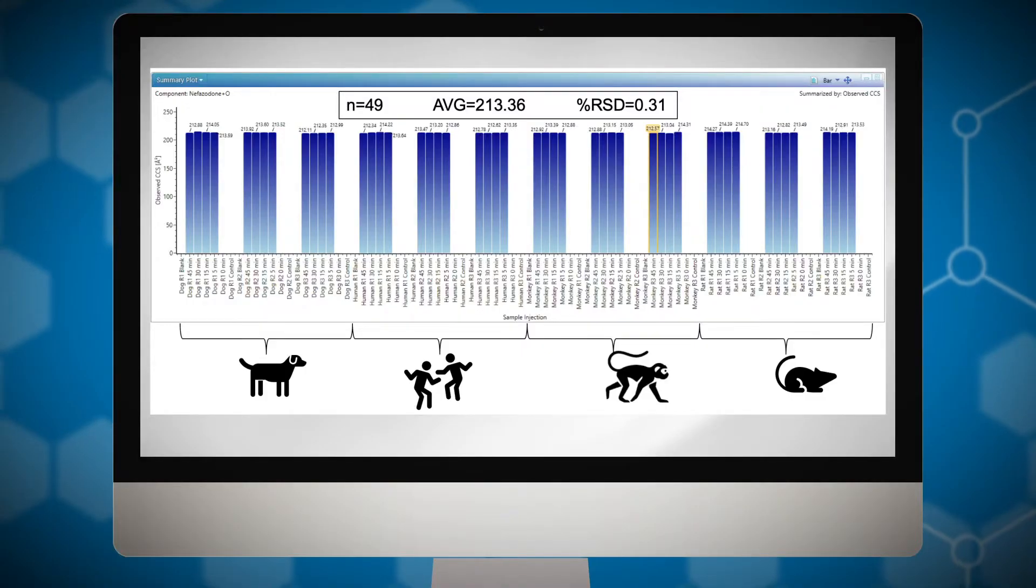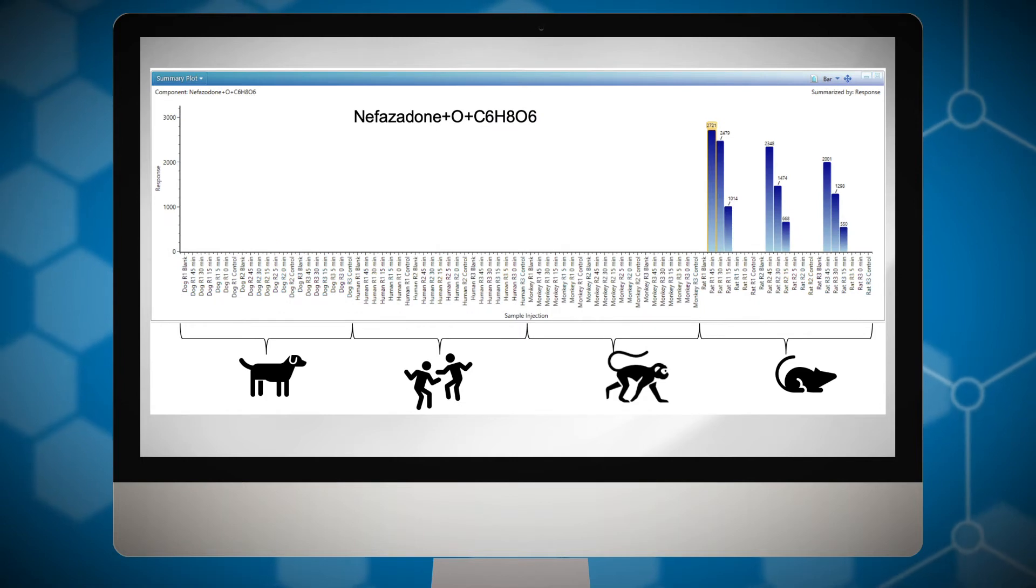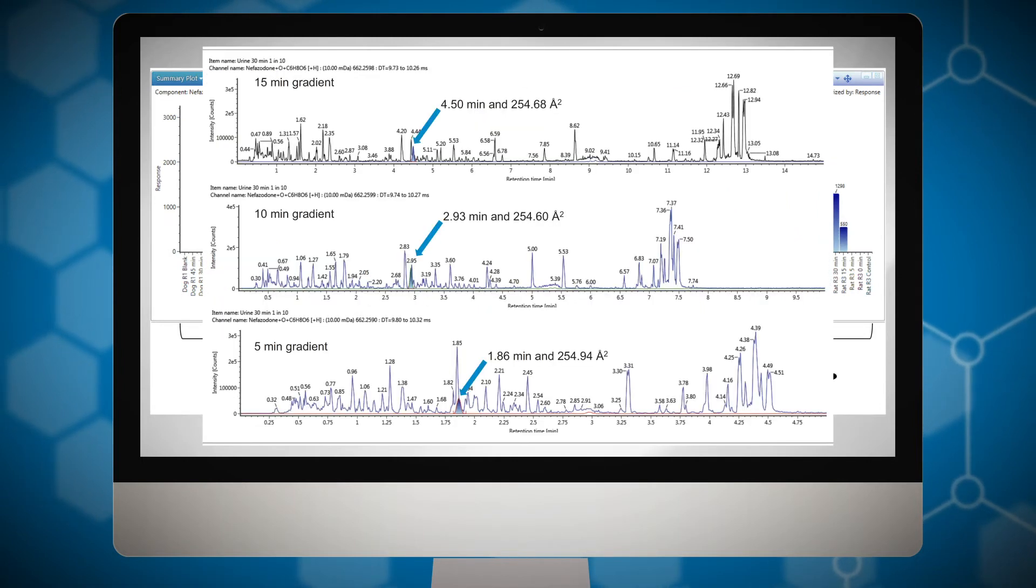Additionally, determination of preclinical species suitable for the study of human metabolism is a critical function and requires the collation and comparison of many metabolites across different experimental data points. Here, we can see the consistency of CCS values across different preclinical species in human samples. We can be confident that metabolites identified during early development are the same ones when a drug transitions to clinical trials. At the same time, we can be confident that a metabolite identified only in mice is not present in humans as well.